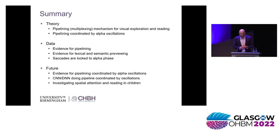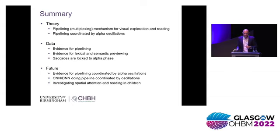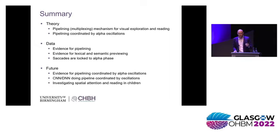I will finish here by summarizing. I have put forward, from a theoretical point of view, a pipelining mechanism supposed to support fast visual processing. We only have 250 milliseconds for each saccade to process what we fixate on, but also what is in the parafovea, and we think a pipelining mechanism can support this. Crucially, timing is needed for this pipelining, and we think alpha oscillations might be key here. We have evidence for parallel processing at different levels in the visual hierarchy, shown with multivariate pattern analysis. Using rapid invisible frequency tagging, we have found evidence for parafoveal processing at the lexical level. Furthermore, we have been able to show that saccades during reading happen to be locked to the phase of alpha oscillations. In the future, we want to further investigate how alpha oscillations are important for coordination of visual processing in the ventral stream, implement deep neural networks that reflect that dynamics, and ultimately develop a pediatric MEG system so we can investigate reading in children.